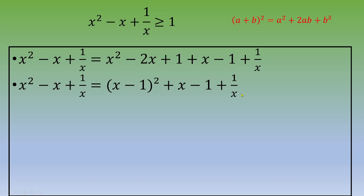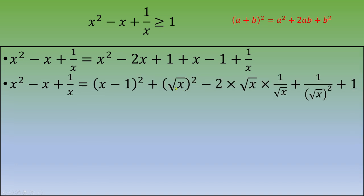Once again, we're going to transform these three terms into a remarkable identity. x could be written as square root of x squared. 1 over x could be written as 1 over square root of x squared.